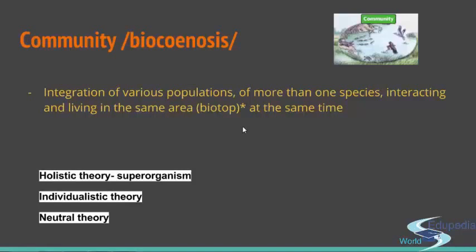On the other hand, the individualistic theory says that every community only depends on the group of populations it is made of. Exactly the same community with the same number and types of species will not be the same, because different populations of different individuals are part of it — so populations determine the habits of the community. This is basically the opposite of holistic theory. Then you have the neutral theory, which says that only the interactions within the community explain its habits and behavior — meaning only those completely natural processes of single populations, such as population dynamics and patterns of distribution, not dependent on abiotic factors, but only what happens within the community and population.